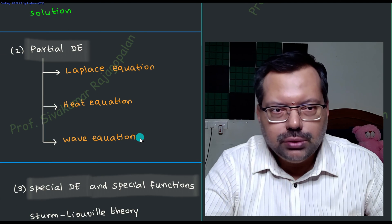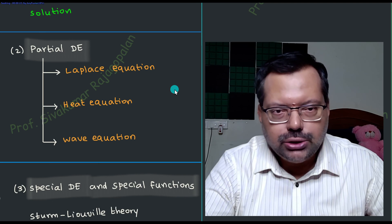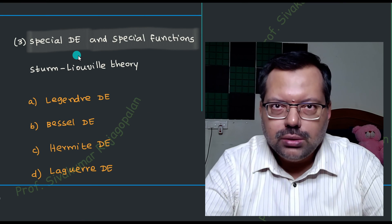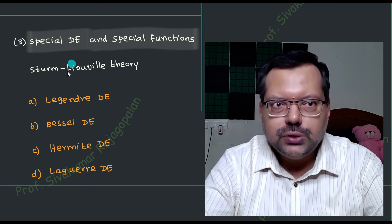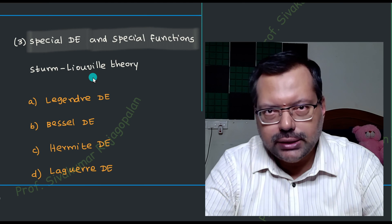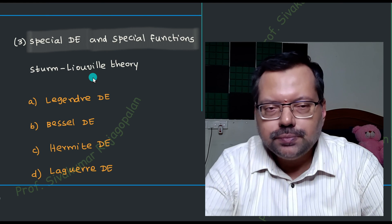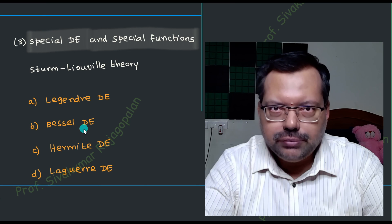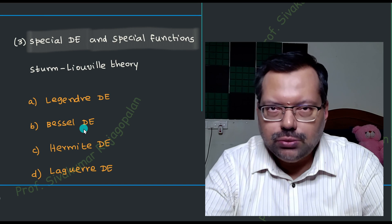With that introduction, once we are studying partial differential equations, something arises naturally. When you start learning partial differential equations — especially the Laplace equation in the three coordinate systems — certain special differential equations arise naturally. These differential equations are categorized under the name of Sturm-Liouville theory, because they have an interesting property known as a self-adjoint operator. The Legendre differential equation and the Bessel differential equation come from the Laplace equation in the respective coordinate system.